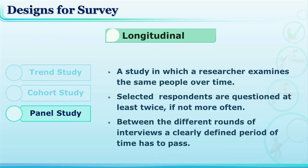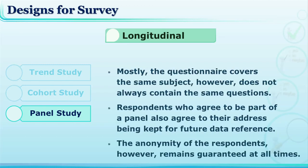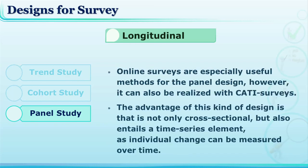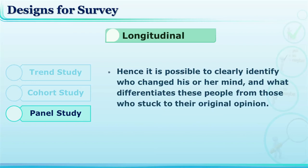In the panel survey, the selected respondents are surveyed at least twice or more. A clearly defined time must elapse between the two interviews or data collection processes. Since respondents must be available for data collection over a period of time, their addresses are kept with the researcher and the respondents must agree to this, though their anonymity is kept confidential. Online surveys are more useful for panel design. In a panel survey, it can be clearly identified who has changed their opinion over a period of time and who has not.